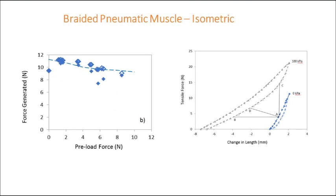Here we see the experimental results for the pneumatic muscle tested under isometric conditions. The force generated decreases slightly with an increase in pre-load force. The right hand figure shows how we can estimate the force generated by the vertical distance between the loading curve in the unpressurized state and the unloading curve in the pressurized state, as represented by the vertical line A to C. When we estimate the blocked force generated at different pre-load forces and plot that as a dashed line in the left hand figure, it agrees quite well with the measured force generated results.